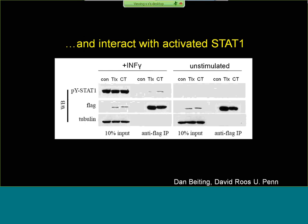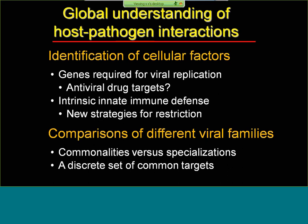I think you can use these high-throughput methodologies to identify factors involved in any biology you're interested in, and certainly to dissect host-pathogen interactions by identifying cellular factors both required for infection and that restrict infection. We hope to use these findings to develop new therapeutic strategies. Comparisons of different viral families will allow us to reveal commonalities versus specializations between particular classes of pathogens, and if we can find a discrete set of common targets used by classes of viruses, we might be able to intervene much more quickly with new emerging pathogens. I'd like to acknowledge the people in my lab who contributed to this work, as well as our collaborators including John Bhatt, David Roos, Carolyn Cornman, and Bob Dome, and thank my funding sources.